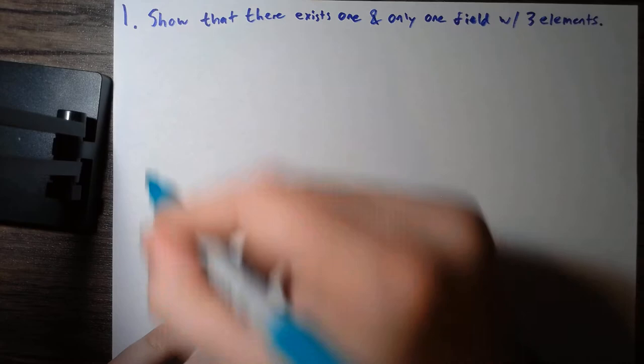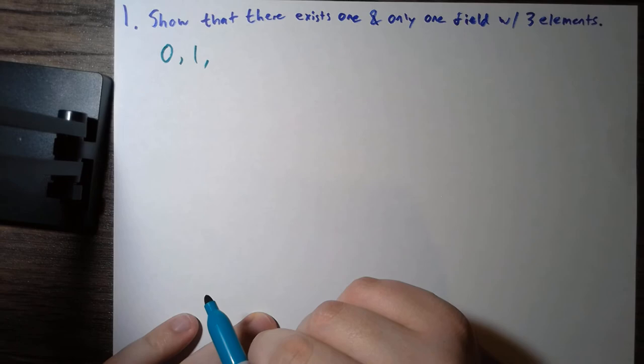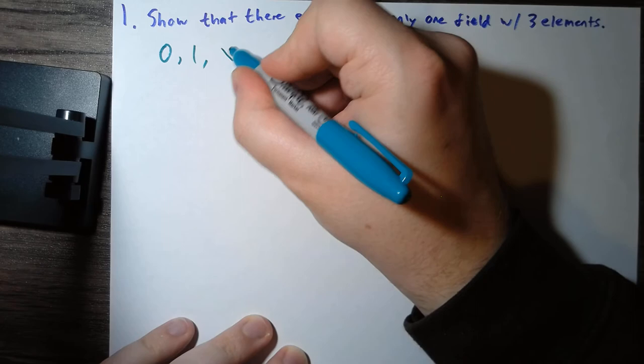So if we remember what a field is, we have to have an additive identity zero, a multiplicative identity one, and if we're only going to have three elements, then we must have some other element. I'm just going to call it x for now.